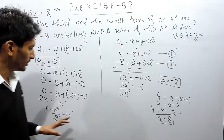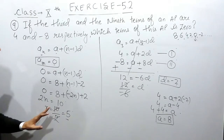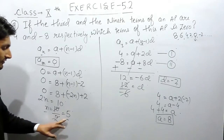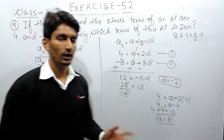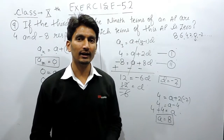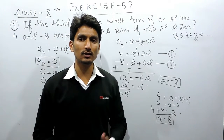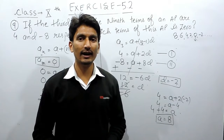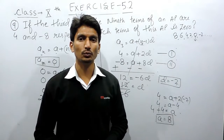This is how you can find which term of an AP is 0. Here the 5th term is 0. I hope you have understood this question. If you have any doubt in maths, you can directly contact us — the phone number and email address are given in the description below. Thank you.